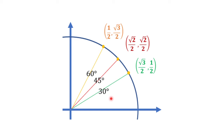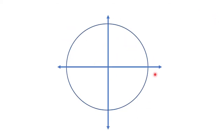You have probably seen some illustrations showing these marked angles and coordinates. This video shows how we get those coordinates. Let's say this is our unit circle. Remember that a unit circle is a circle having a radius of 1. Therefore, we can easily identify some of the points on the unit circle.